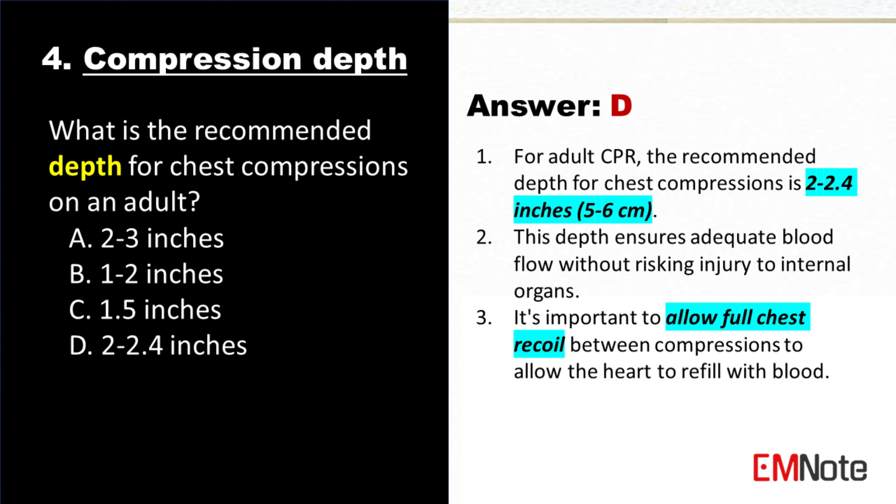For adult CPR, the recommended depth for chest compressions is 2 to 2.4 inches or 5 to 6 centimeters. This depth ensures adequate blood flow without risking injury to internal organs. It's important to allow full chest recoil between compressions to allow the heart to refill with blood.